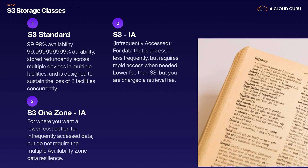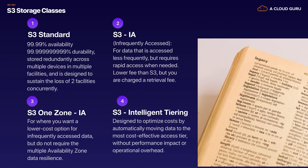S3 One Zone Infrequently Accessed is when you want a really low-cost option for infrequently accessed data and you don't need multiple availability zones — it's stored in just one availability zone. At re:Invent 2018, Amazon released S3 Intelligent Tiering, which uses machine learning to look at how often you use your objects and automatically moves them around the different storage classes based on what it has learned — for example, from S3 Standard to S3 Infrequently Accessed.